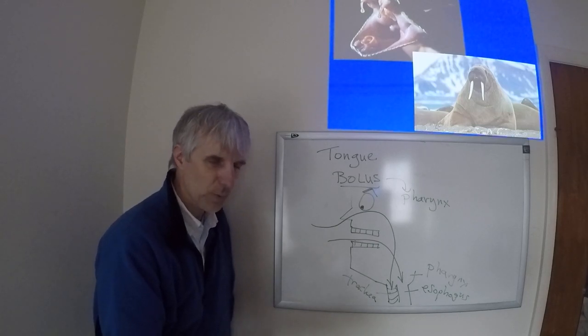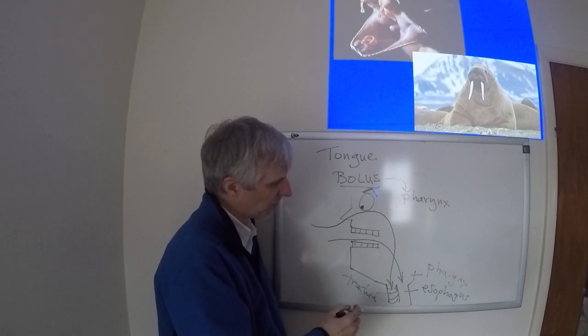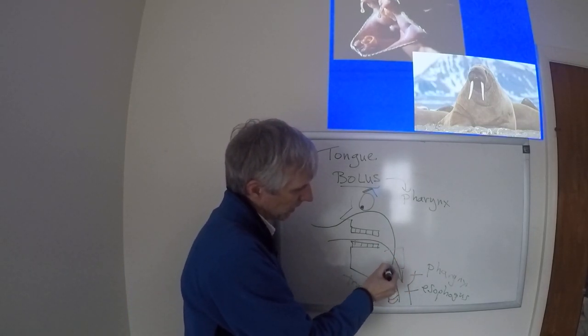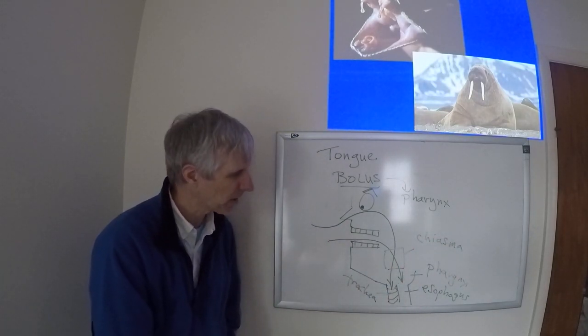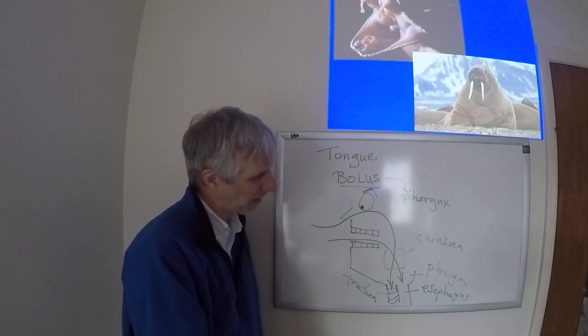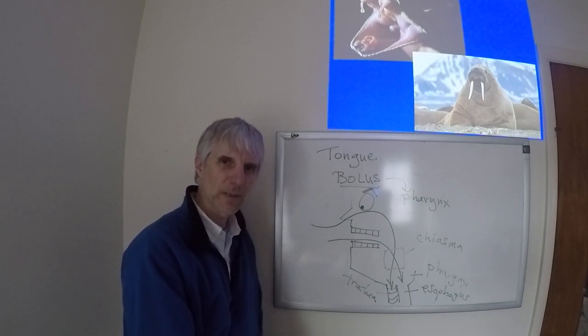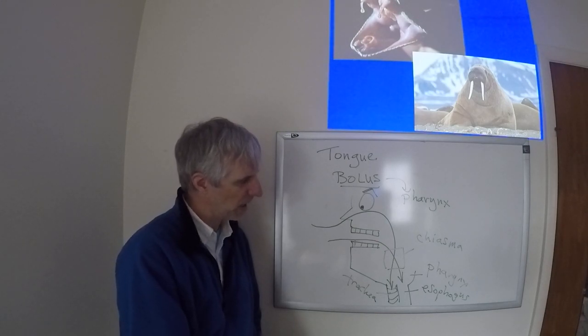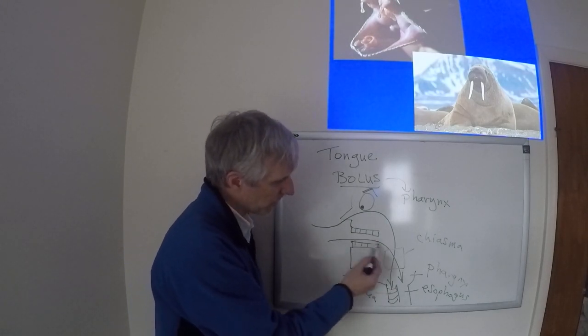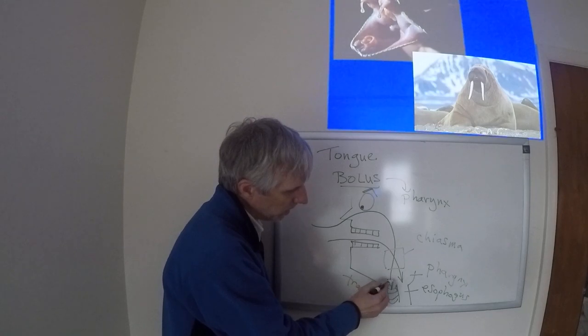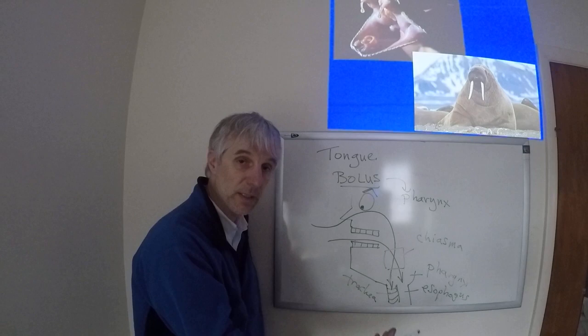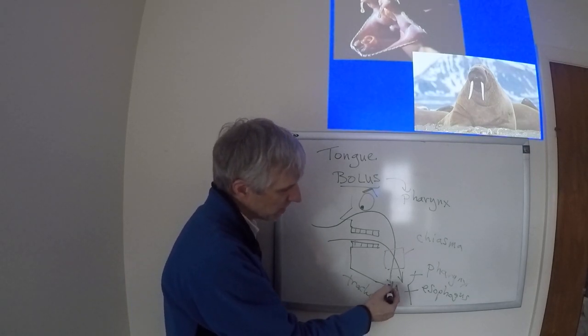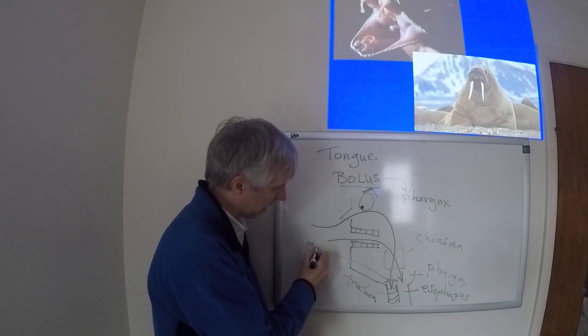I want to point out again, this is called the chiasma. Not the best engineering when you think about how to construct an organism. This is probably not something that you would consciously set up, because that means anytime you eat something, the bolus has to cross over the trachea. If the bolus falls into the trachea, you're going to choke. So there is that little flap here called the epiglottis.